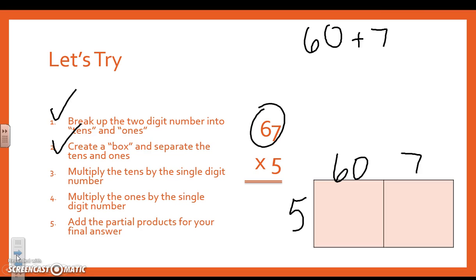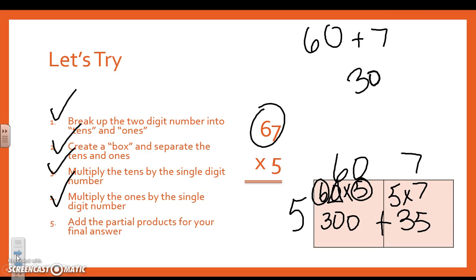Multiply the tens by the single-digit. So 60 times 5. 6 times 5 is 30. One more 0. 300. 5 times 7 is 35. We did steps 3 and 4. Add your partial products. 300 plus 35. This one's pretty easy. 5, 3, and 3. So 335 is your final answer.